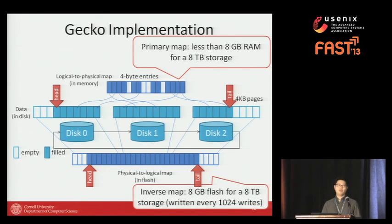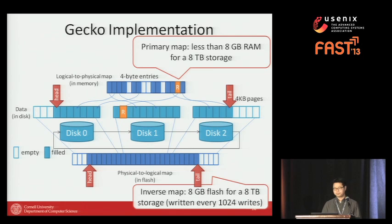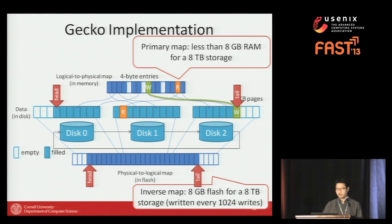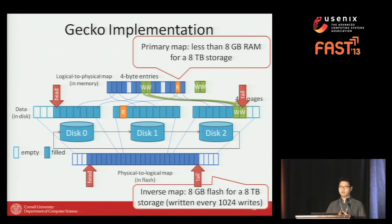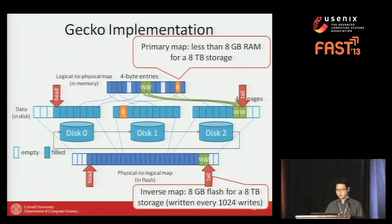For read operations, we consult the logical-to-physical mapping to find the physical location and retrieve the data. For writes, we look at the mapping, find the next tail location, write the data, and prepare a physical-to-logical mapping entry in memory. These small mapping entries are cached until a certain amount is gathered and then flushed to flash, at which point the data is persistent.